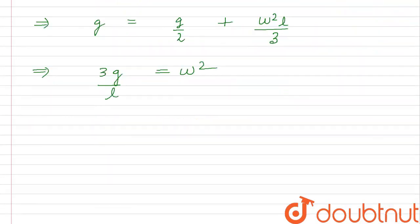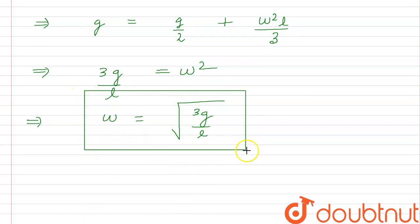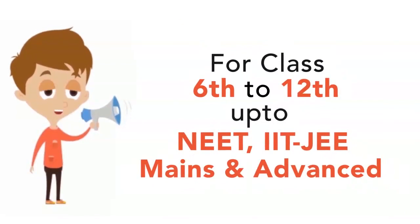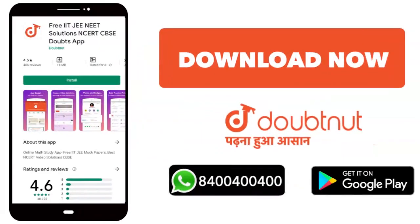Now solving for omega, omega comes out to be √(3g/L). That is our final answer. From class 6 to 12, for IIT Mains and Advanced level, Doubtnet has more than 10 million students. Download the Doubtnet app today. Thank you!